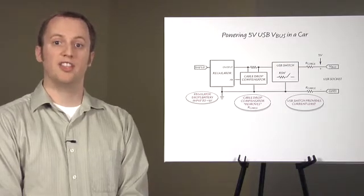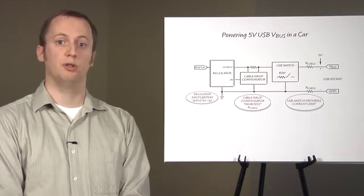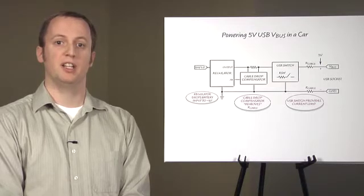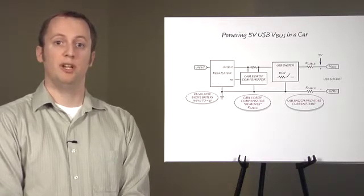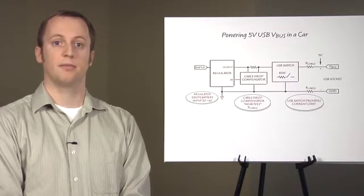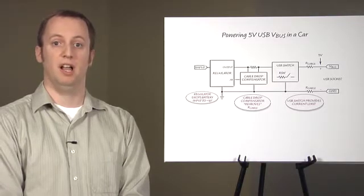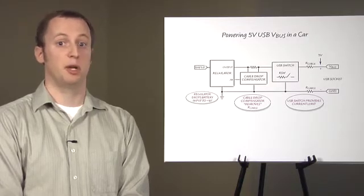In a car, this high V-Bus current presents a challenge. Car electronics, including the V-Bus regulator, often reside behind the dash, while the USB sockets may be placed in the back seat. The cabling between the V-Bus regulator and the socket can be several meters in length. Long cables mean high resistance, so the 5-volt V-Bus supply drops out at the socket at high USB device current. This cable resistance is a real problem.